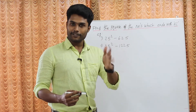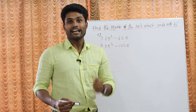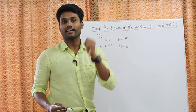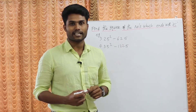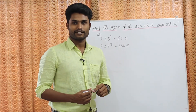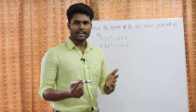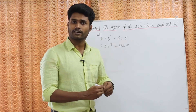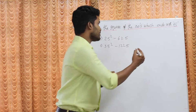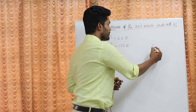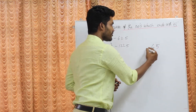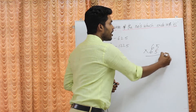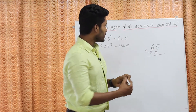Friends, can you tell me 65 square in just 2 seconds? Most people would multiply 65 by 65 on their test paper using the standard method.